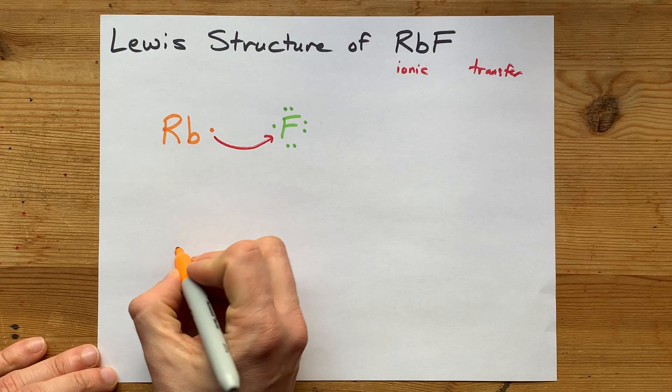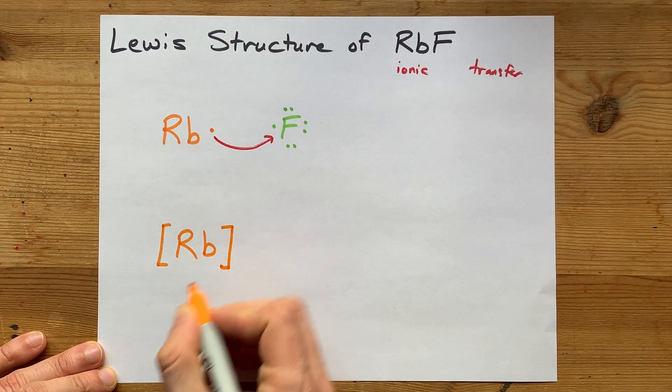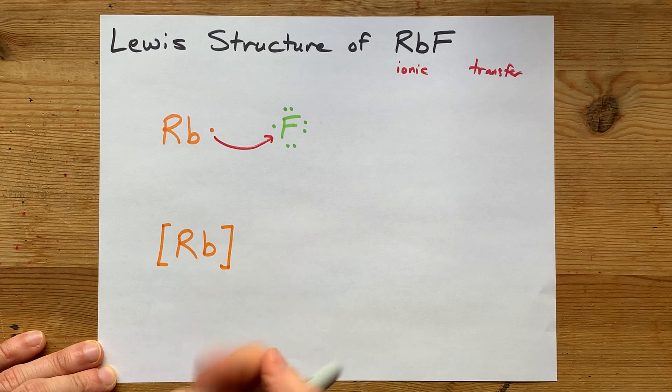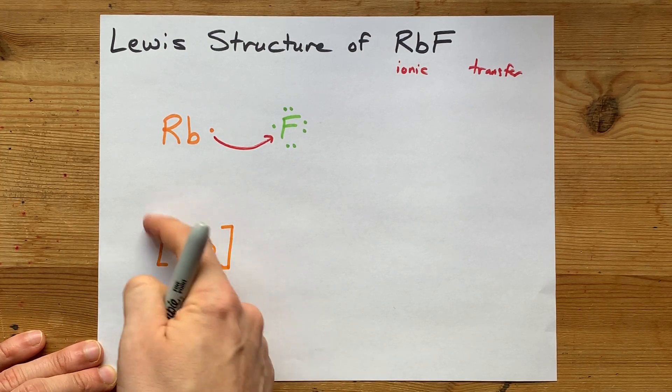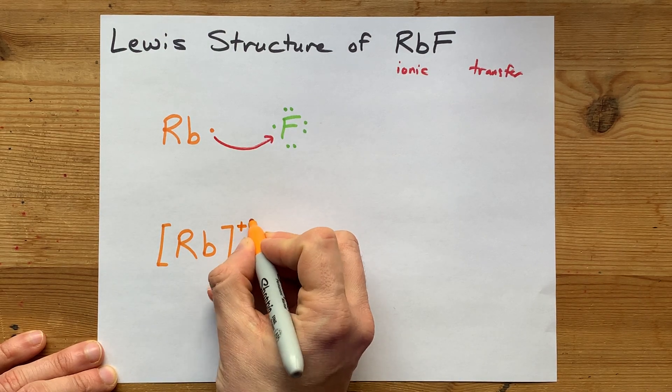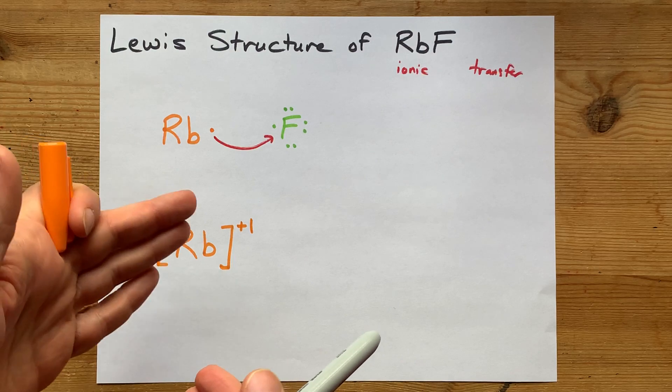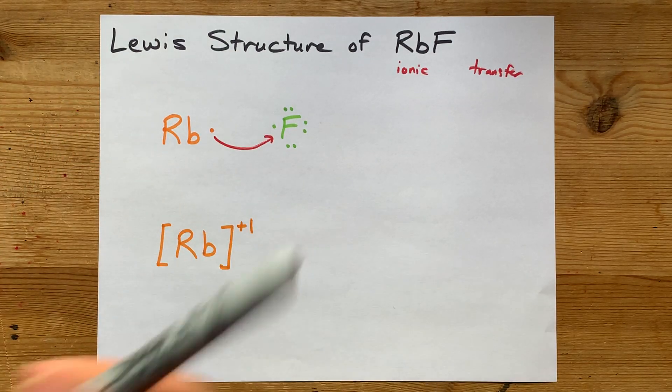So, the final Lewis structure here is going to show that the rubidium no longer has its valence electron. Do not put a dot around it. Put square brackets around it because it's now an ion. And that charge is plus one because it lost a negatively charged electron. Losing a negative makes it positive.